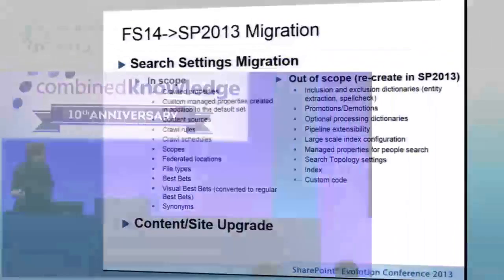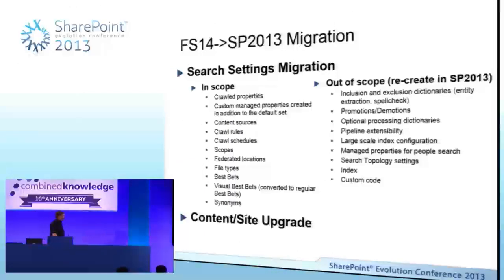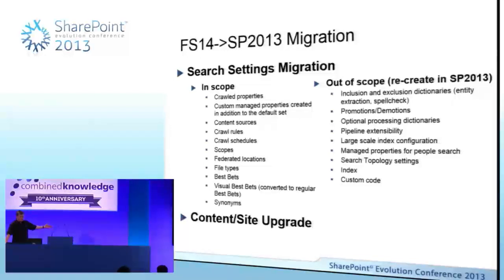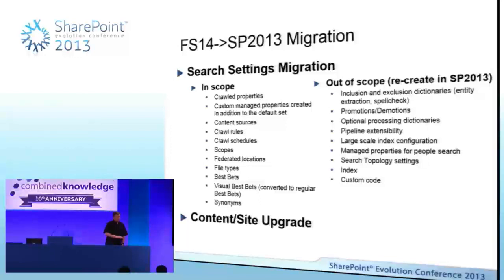In scope and out of scope for FAST — there's more granular detail here. Things that do come over include crawl properties, some managed properties, content sources. But specifically out of scope are probably some of the things those of you with FAST deployed it for: some inclusion and exclusion rules, customization pieces, and the pipeline extensibility capability that FAST has — you're going to lose all of that. As they build and refine these scripts, they're trying to get more of these features to come across, but some simply can't because SharePoint 2013 search doesn't support them.